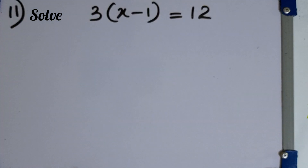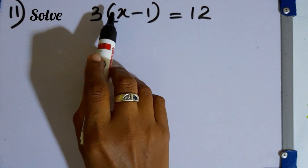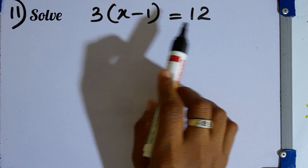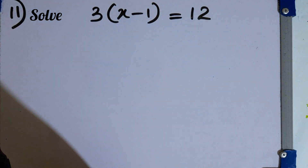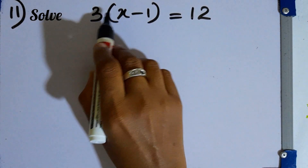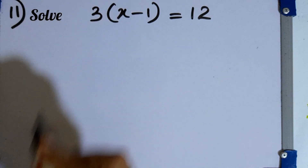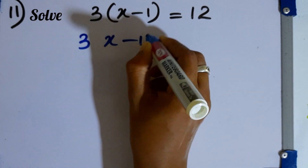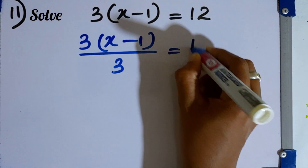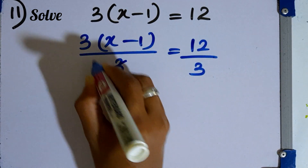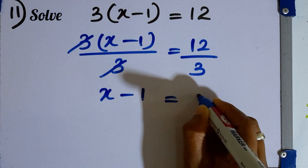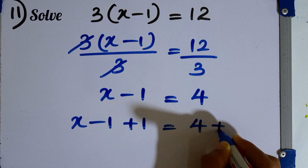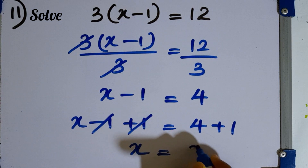Question number 11. Solve 3(x minus 1) equals 12. The bracket means x minus 1 is multiplied by 3. The opposite operation is division, so divide both sides by 3: x minus 1 equals 4. Then add 1 to both sides: x minus 1 plus 1 equals 4 plus 1, giving x equals 5. That is the answer.